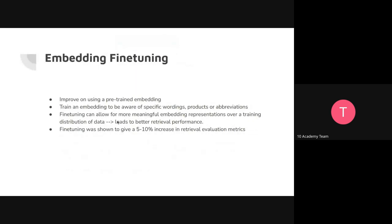Finally, there is fine-tuning of embedding models. Before we discussed fine-tuning LLMs; now we can fine-tune an embedding model. The embedding model encodes your text into vectors that carry semantic meaning. But depending on what text it was trained on, if we use our embedding on documents from a particular domain with particular terms, particular wordings, particular products, or particular abbreviations — the pre-trained embedding may not understand them as well.